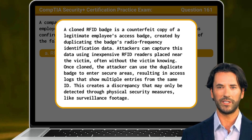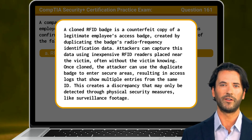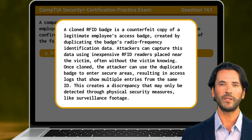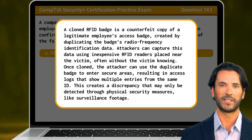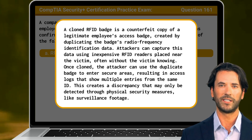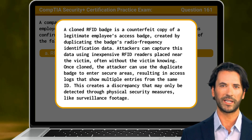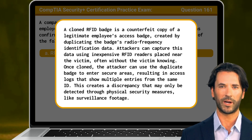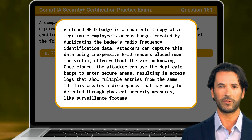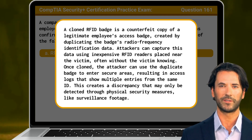Attackers can capture this data using inexpensive RFID readers placed near the victim, often without the victim knowing. Once cloned, the attacker can use the duplicate badge to enter secure areas, resulting in access logs that show multiple entries from the same ID. This creates a discrepancy that may only be detected through physical security measures like surveillance footage.